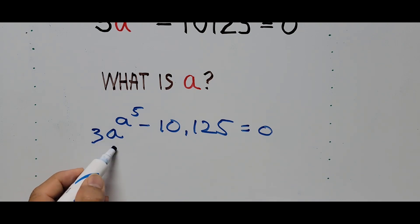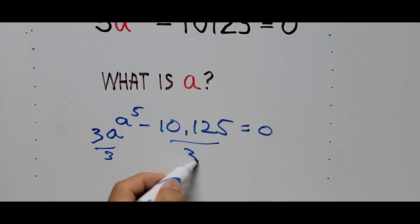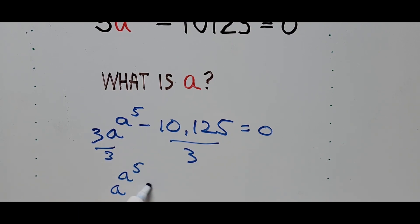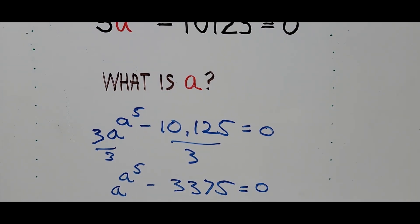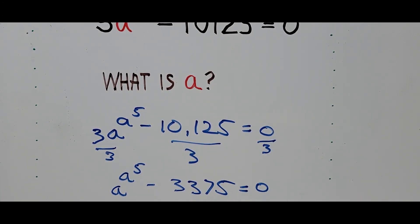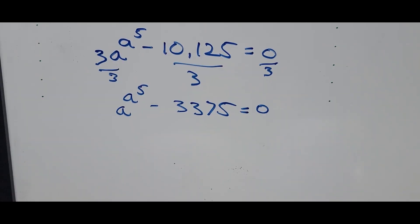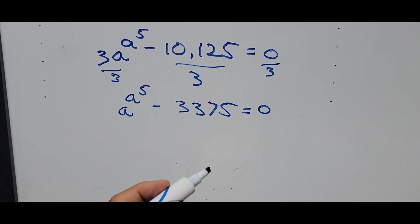We divide the whole equation by 3. That gives us a raised to a raised to the fifth power minus 10,125 divided by 3, which equals 3,375, set equal to zero. Zero divided by 3 is still zero.